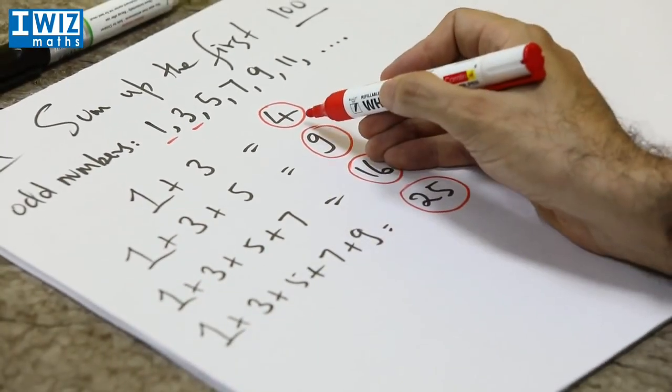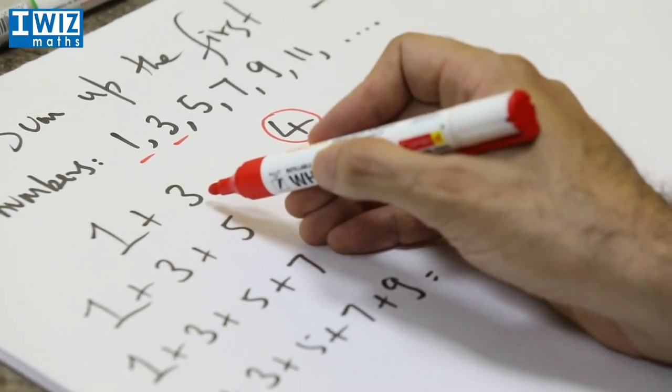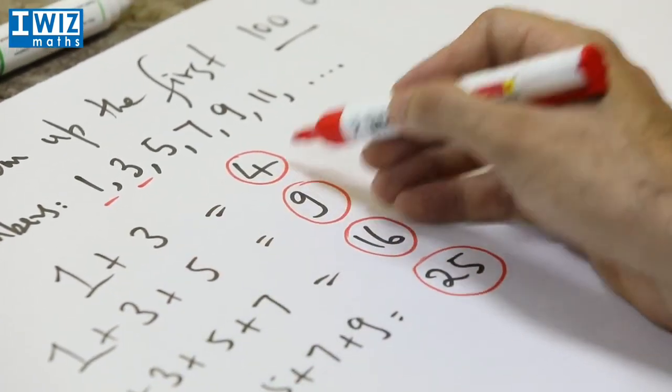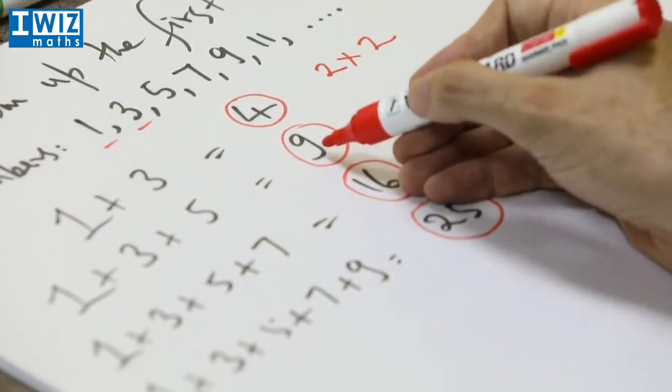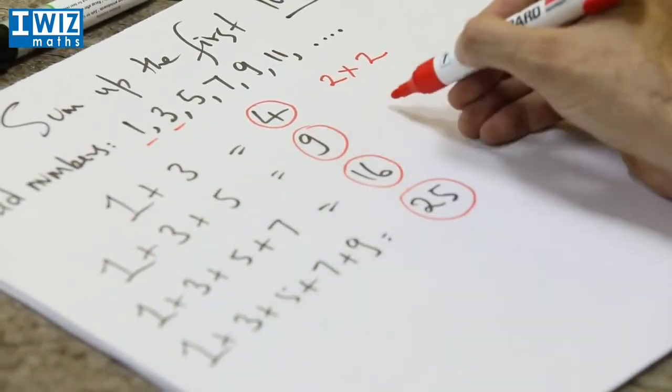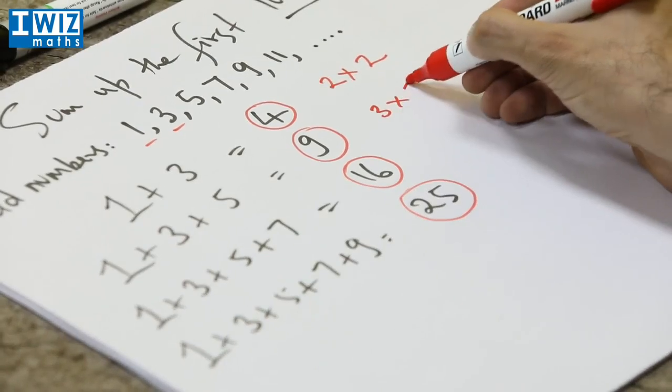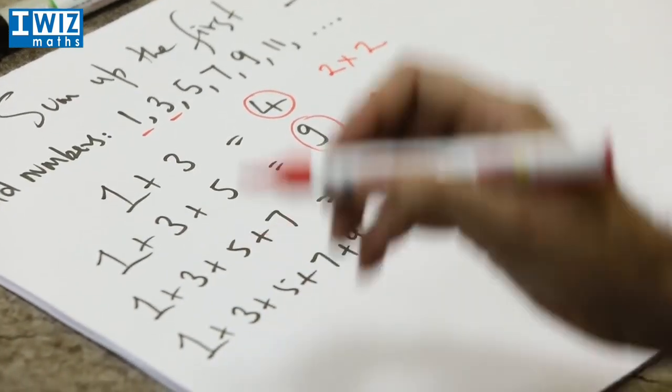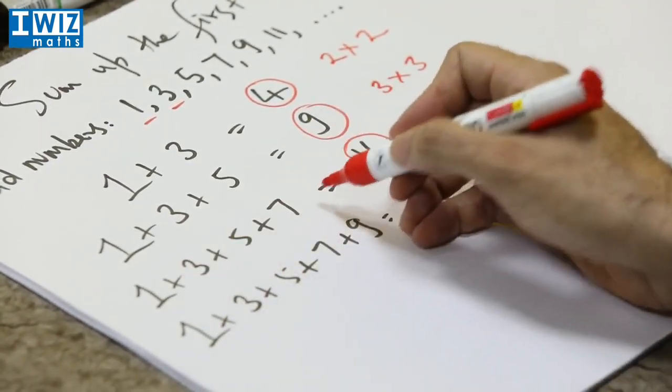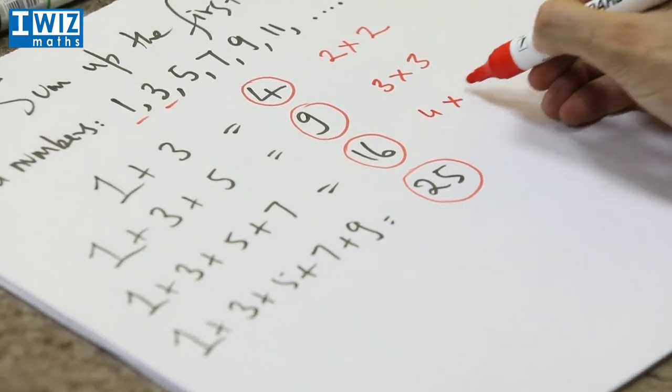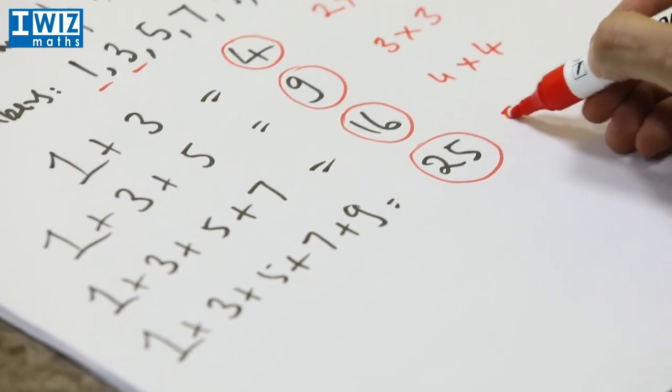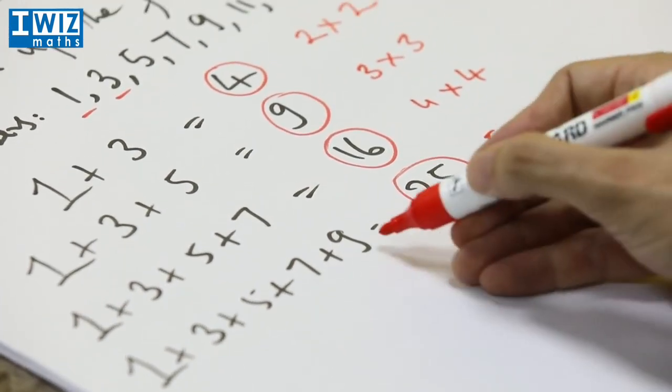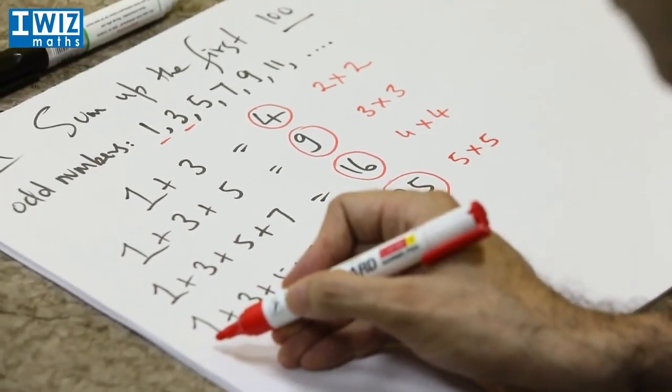Now 4 is just the sum of the first two odd numbers and 4 is just 2 times 2. 9 which is the sum of the first three odd numbers is simply 3 times 3. 16 is the sum of the first four odd numbers which is 4 times 4. We can spot a pattern here because 25 is nothing but 5 times 5 and it's the sum of the first five odd numbers.